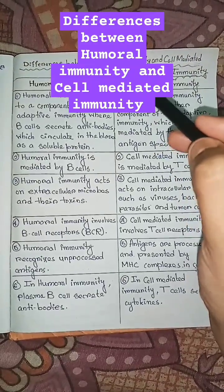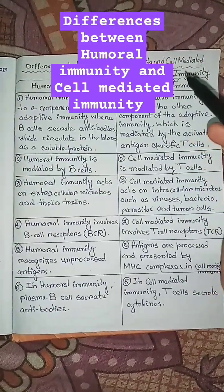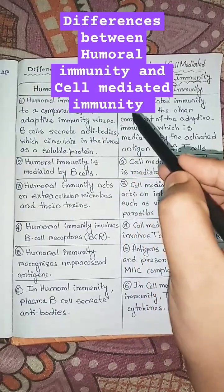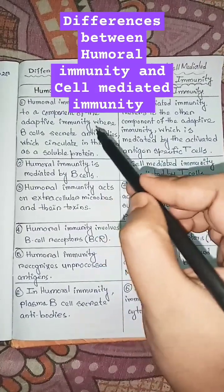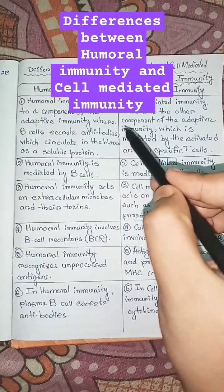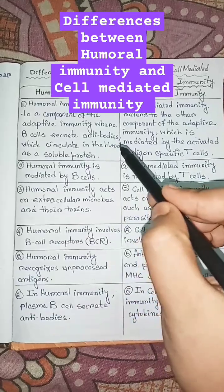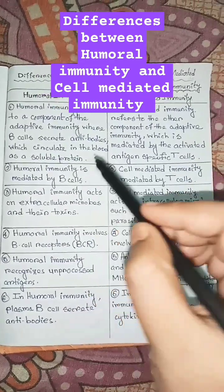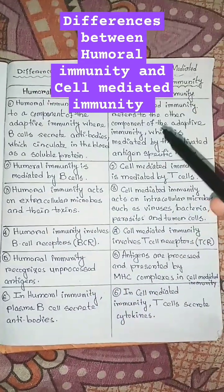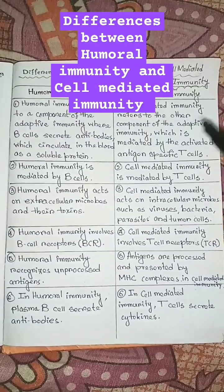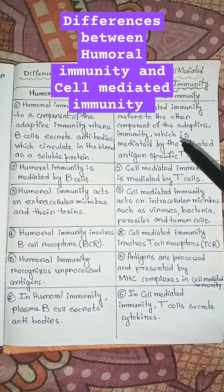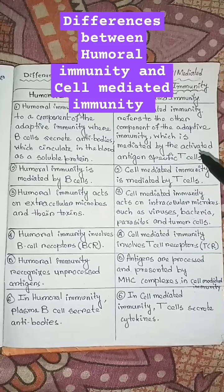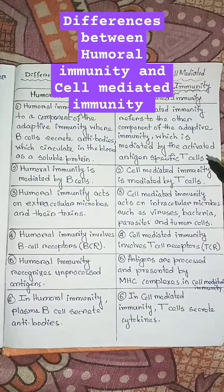Differences between Humoral Immunity and Cell-Mediated Immunity. Humoral immunity refers to a component of the adaptive immunity where B-cells secrete antibodies which circulate in the blood as a soluble protein. Cell-mediated immunity refers to the other component of the adaptive immunity which is mediated by the activated antigen-specific T-cells.